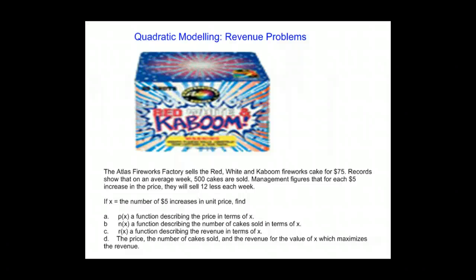So let X be the number of $5 increases in the unit price. Find P, a function describing the price in terms of X. N, a function describing the number of cakes sold in a week in terms of X. R, a function describing the revenue in terms of X. And then finally find the price, the number of cakes sold, and the revenue for that value of X which maximizes the revenue.